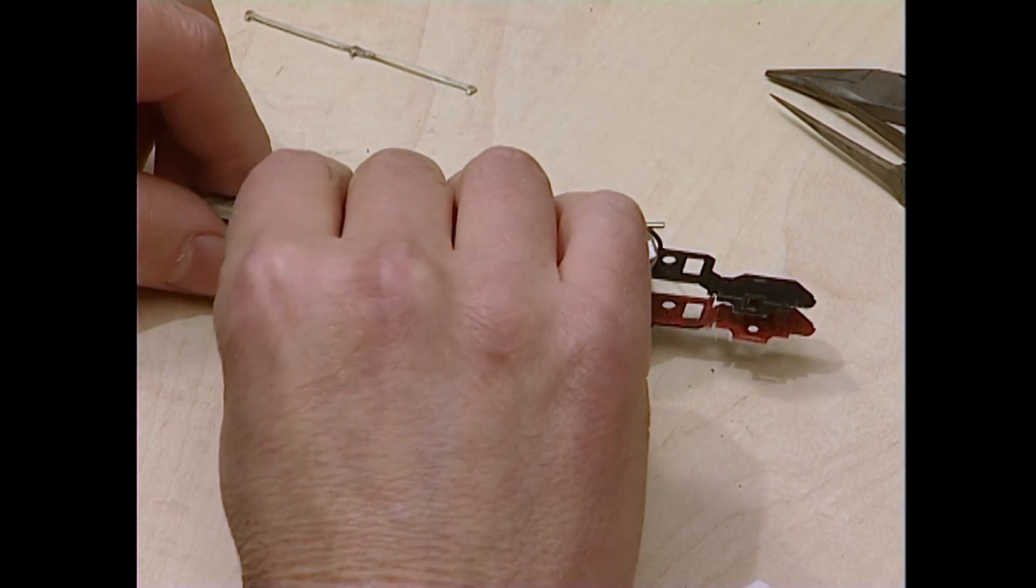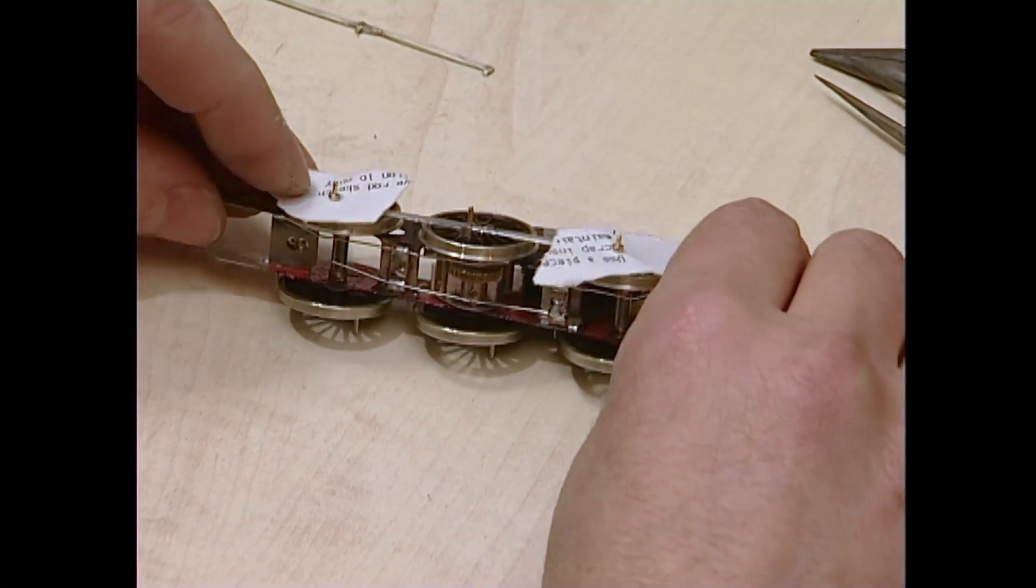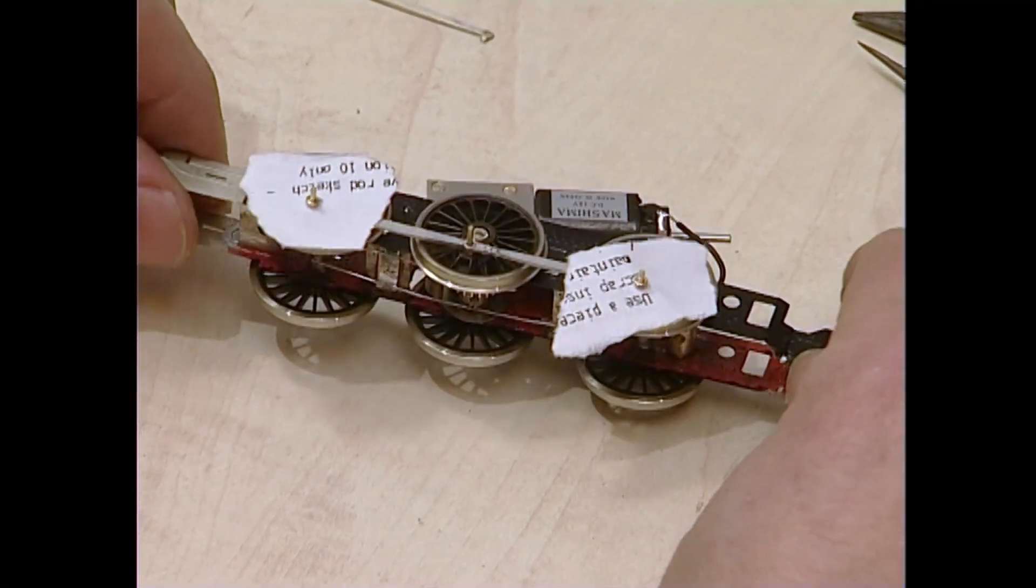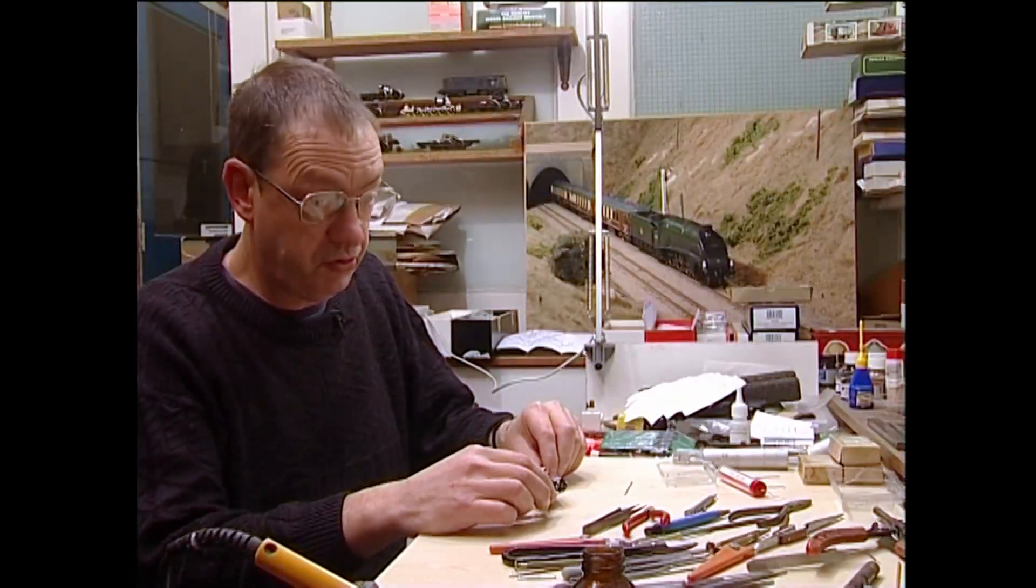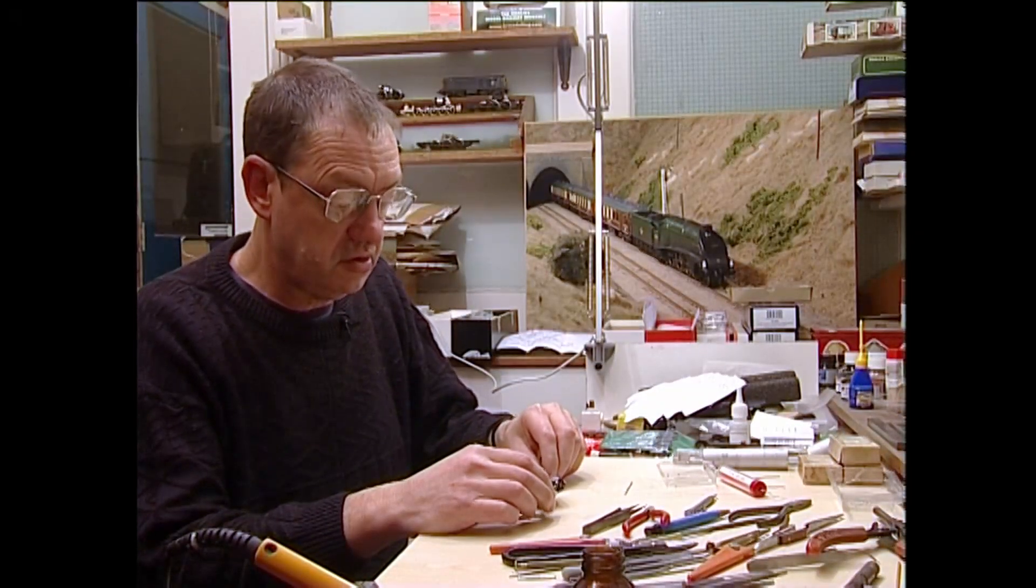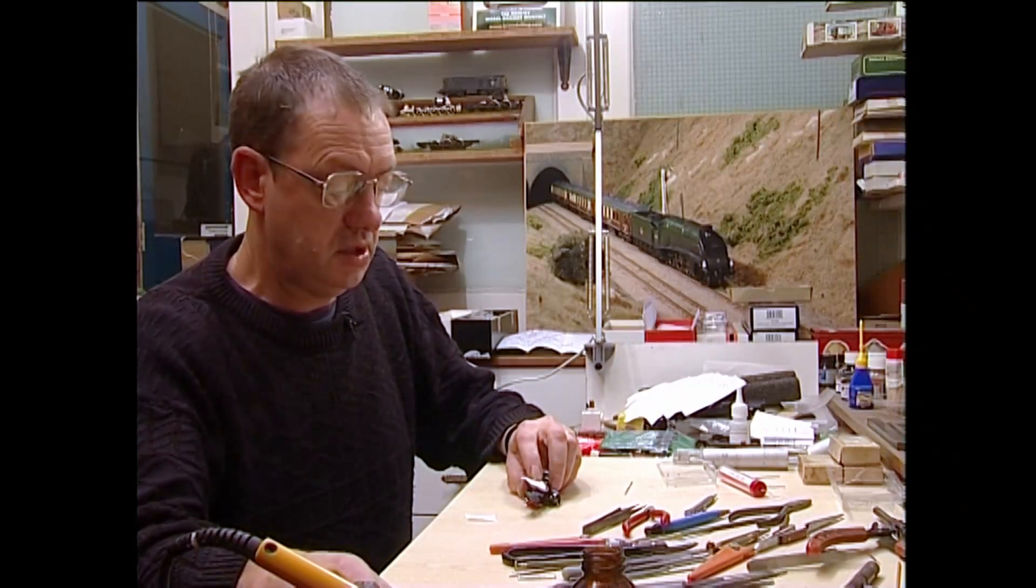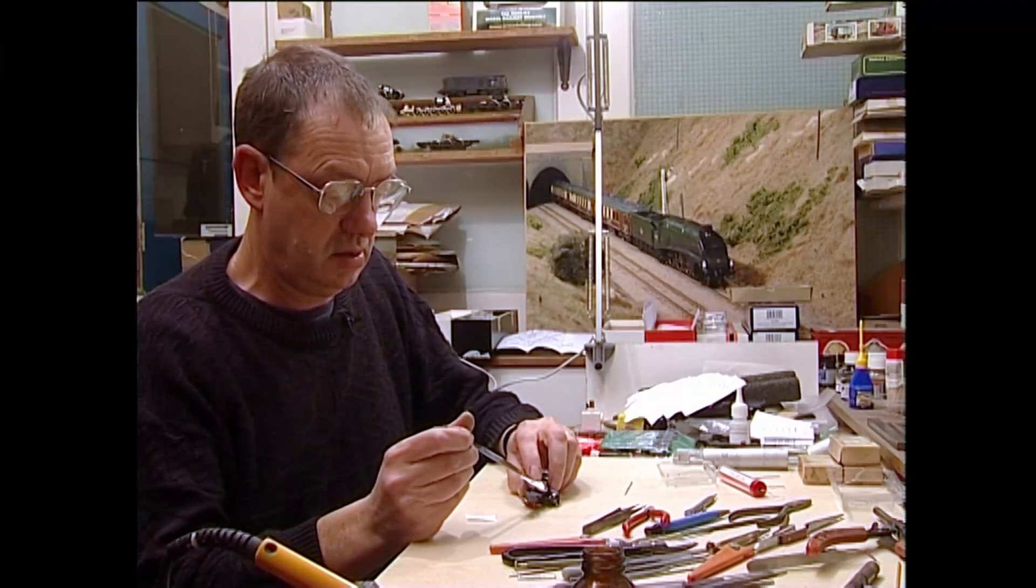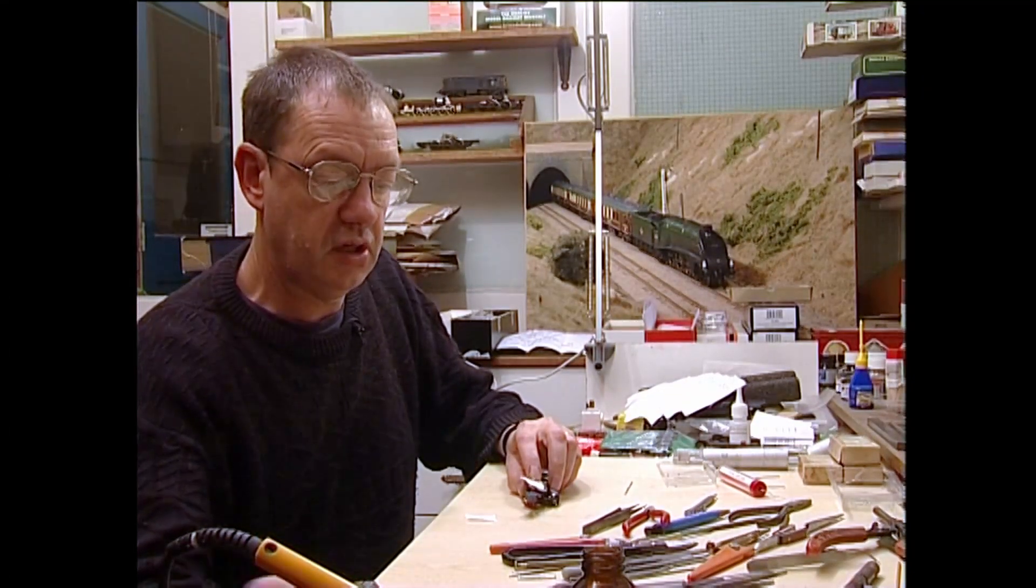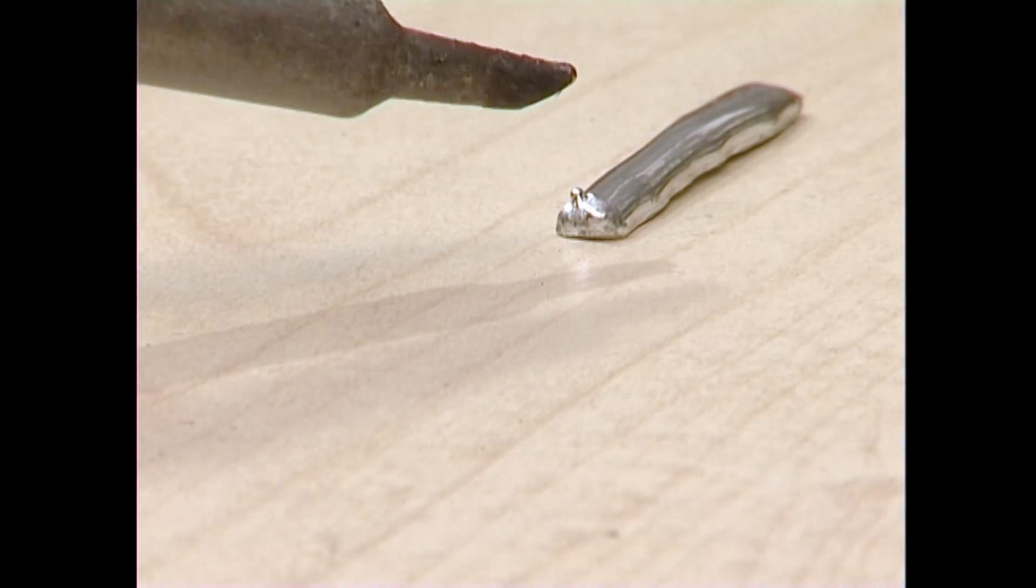Remember, this is the first time it's moved. So no running in has taken place. That, in fact, is a very good beginning. Next job, secure the rods. To secure the rods, we're going to use the Romford system, which is a brass washer, which uses solder to the top edge of the crank pin.